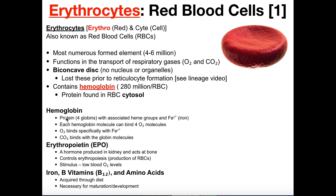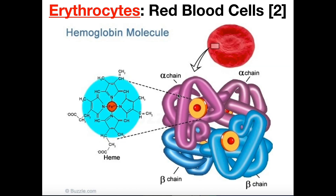Hemoglobin is composed of four globin proteins. Looking at the diagram, there's one globin on the top left, one on the top right, one on the bottom right, and one on the bottom left. Each globin has its own heme, which is an organic coenzyme composed largely of carbon and hydrogen. At the center of the heme, bound by four nitrogen atoms, is an iron ion in the 2+ oxidation state (Fe²⁺), and it is this iron that directly binds oxygen.